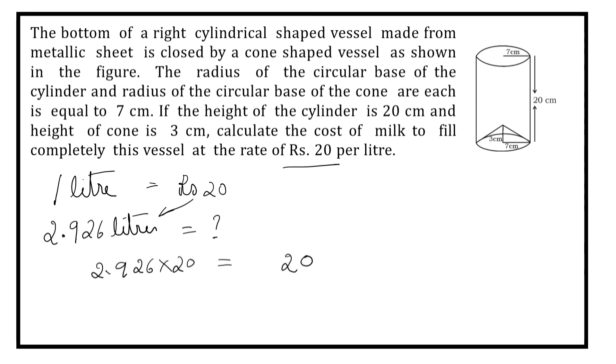2 times 6 are 12. 2 times 2 are 4, 1, 5. 2 times 9 are 18. 2 times 2 are 4 plus 1, 5. How many points? So the cost is Rs. 58.52.